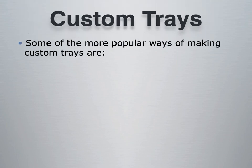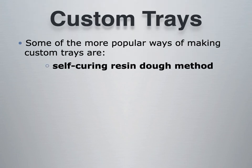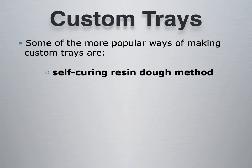Popular ways of making a custom tray include the self-curing resin dough method, which uses cold-cure acrylic. Monomer is the liquid and polymer is the powder; when mixed together a chemical reaction called polymerization occurs. The acrylic goes through stages — it becomes doughy and then hardens into a resin. This dough can be rolled out like pizza dough and shaped into the desired form of a custom tray.